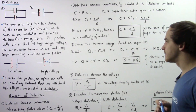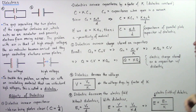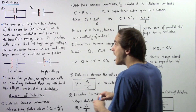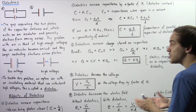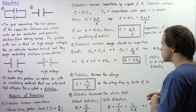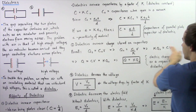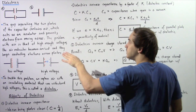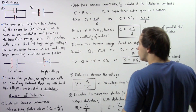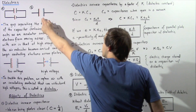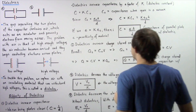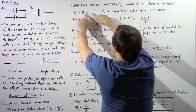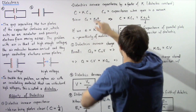Dielectrics also increase the charge stored on the capacitor, which makes sense because if capacitance increases, the capacitor can by definition store more electric charge. The quantity of electric charge stored when there is a vacuum between the plates is Q0, equal to C0 multiplied by the voltage. Rearranging, C0 equals C divided by K.